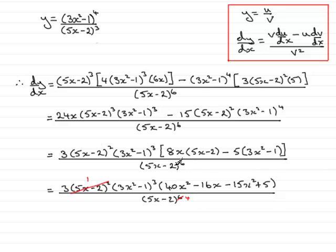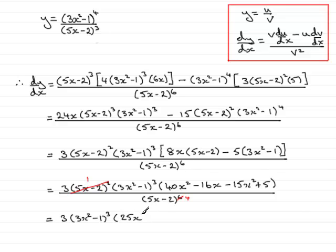Simplifying the bracket: we copy the 3 and (3x squared minus 1) cubed, then combine 40x squared minus 15x squared to get 25x squared, minus 16x, plus 5. So the final answer is 3 times (3x squared minus 1) cubed times (25x squared minus 16x plus 5), all divided by (5x minus 2) to the power 4.